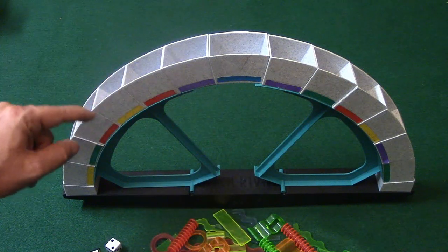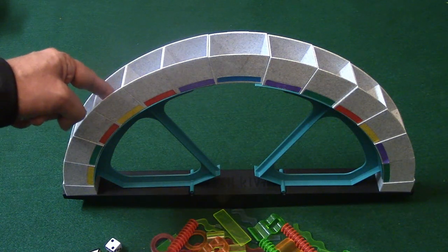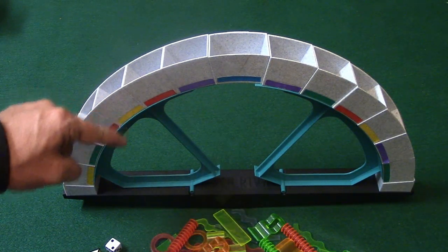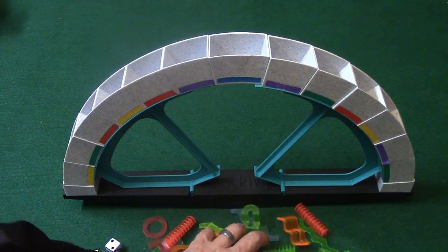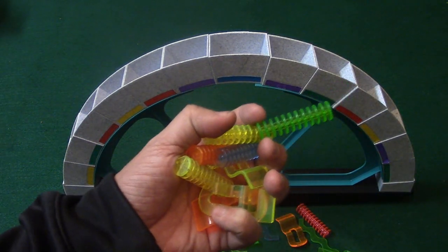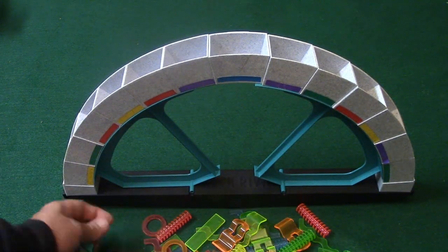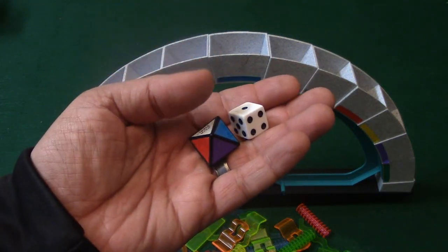Now the arch is going to be made up of these different compartments that have different colors on them, and what you're going to be doing is you're going to be stacking these different pieces into these different compartments and you're going to be rolling the dice to determine which one.